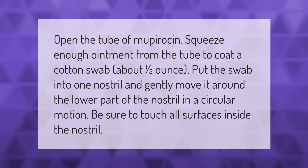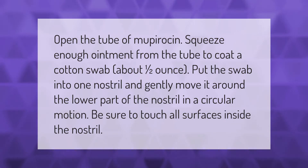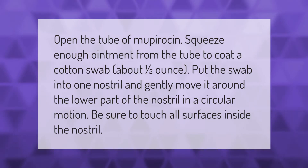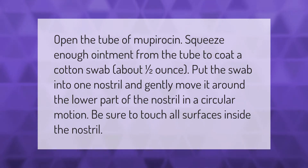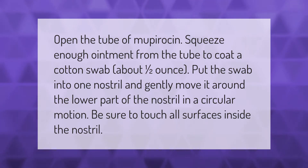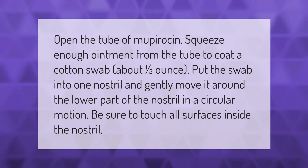Open the tube of mupirocin. Squeeze enough ointment from the tube to coat a cotton swab — about one half ounce. Put the swab into one nostril and gently move it around the lower part of the nostril in a circular motion. Be sure to touch all surfaces inside the nostril.